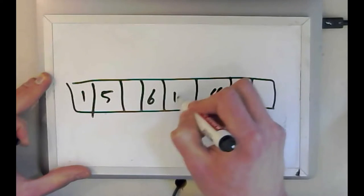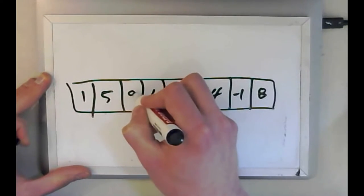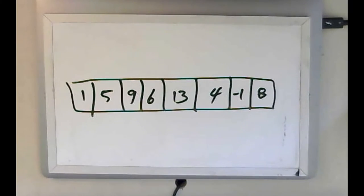a negative one, a 13, an eight, and a nine. Now here's my data and you can see right now, this data is unordered.